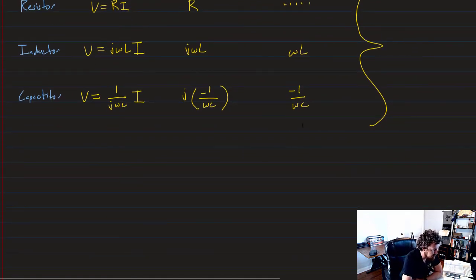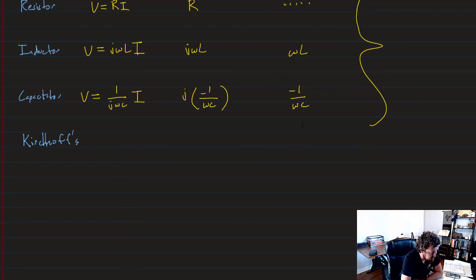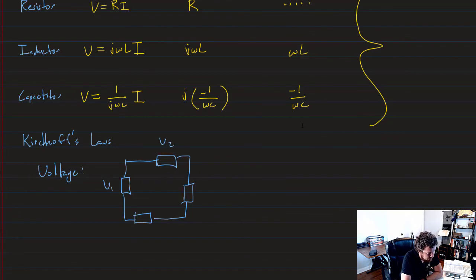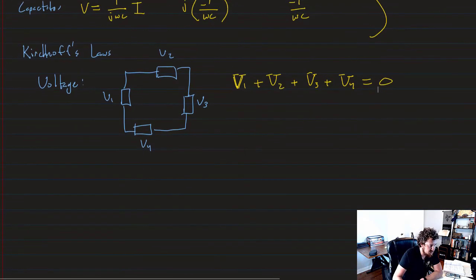Now a final note about Kirchhoff's Laws. Kirchhoff's Laws for voltage, remember, around a closed loop. We say that's V1, V2, V3, and V4. We're just going to have that, even though it's phasors, phasor V1 plus phasor V2 plus phasor V3 plus phasor V4, all the voltages around a closed loop, equals zero, just like before.